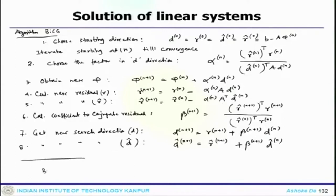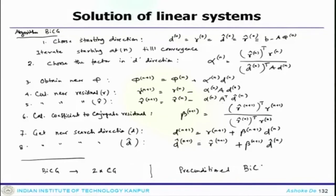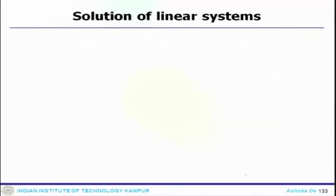One can immediately see that the bi-CG process takes twice the computational time compared to CG because of this splitting. Also, as we have seen for the conjugate gradient that one can have a preconditioned conjugate gradient, in this case it is also possible to have a preconditioned bi-CG, which can improve the rate of convergence and make it faster. That is why sometimes it is preferred to use some kind of preconditioning. This would be the preconditioned bi-CG algorithm.